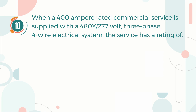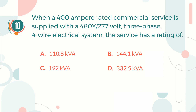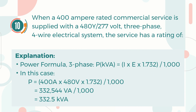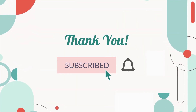Number ten: When a 400 ampere rated commercial service is supplied with a 480 volt delta / 277 volt Y, three phase four wire electrical system, the service has a rating of — A) 110.8 kVA, B) 144.1 kVA, C) 192 kVA, D) 332.5 kVA. The correct answer is D, 332.5 kVA. We apply the three phase power formula: kVA equals 1.732 times the multiplication of current in amperes and voltage in volts, divided by 1,000. Power equals 1.732 × (400 × 480) ÷ 1,000, giving the answer of 332.5 kVA. Thanks for watching — don't forget to like, share, and subscribe to our channel for updated videos every week.